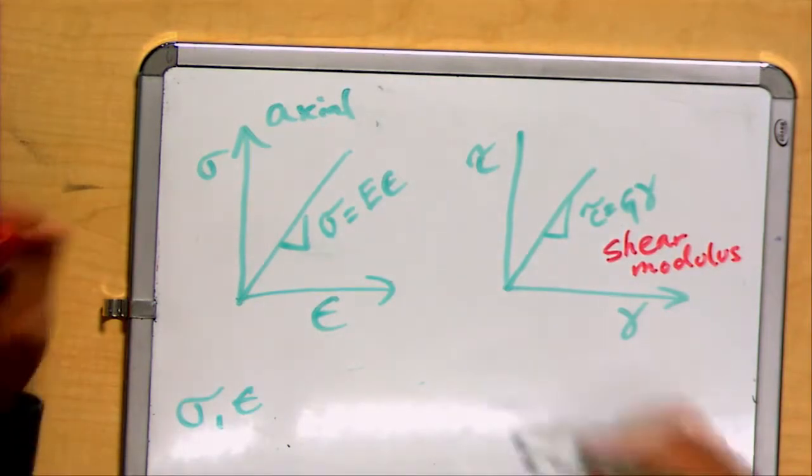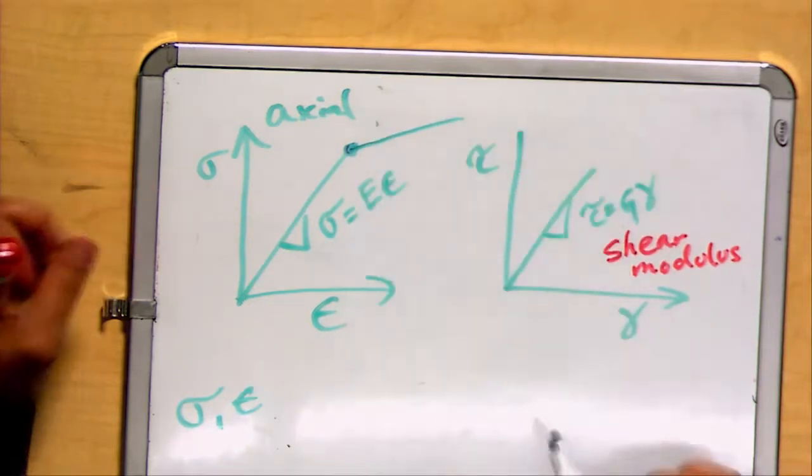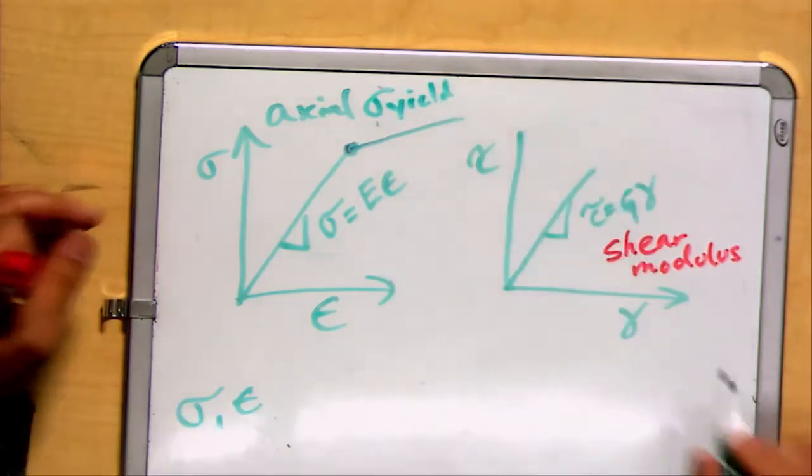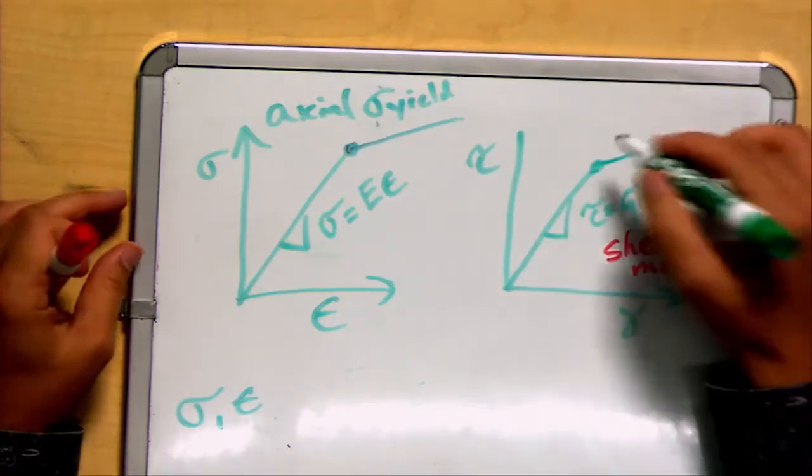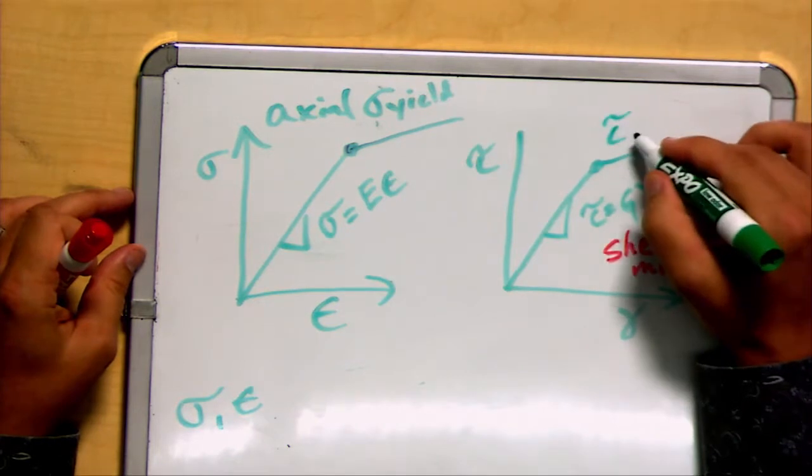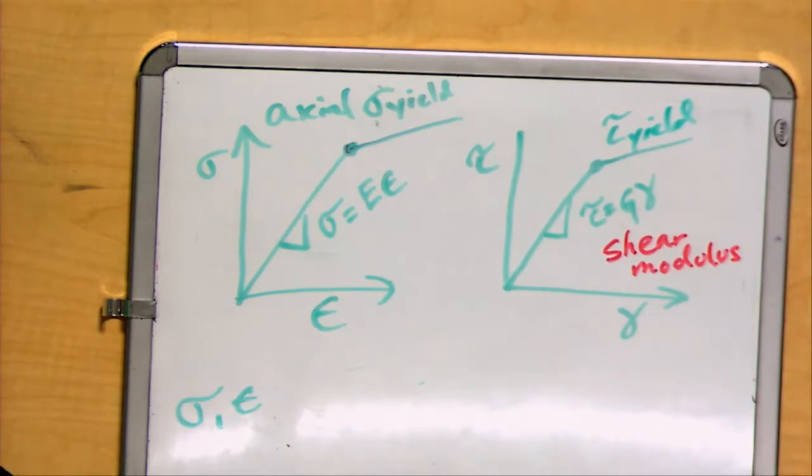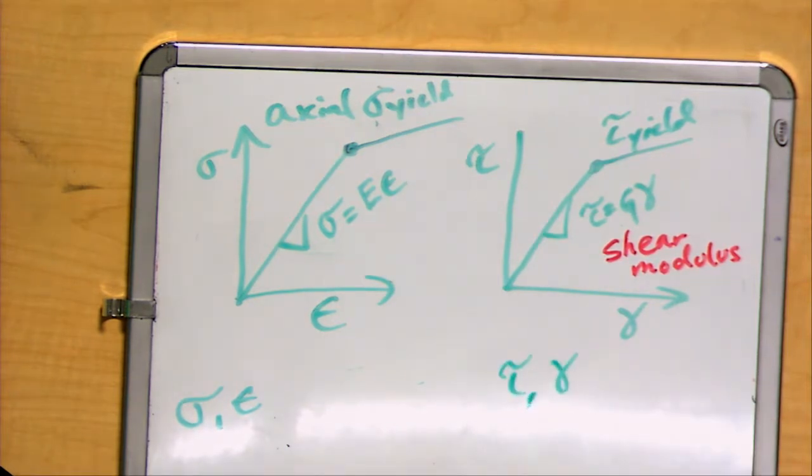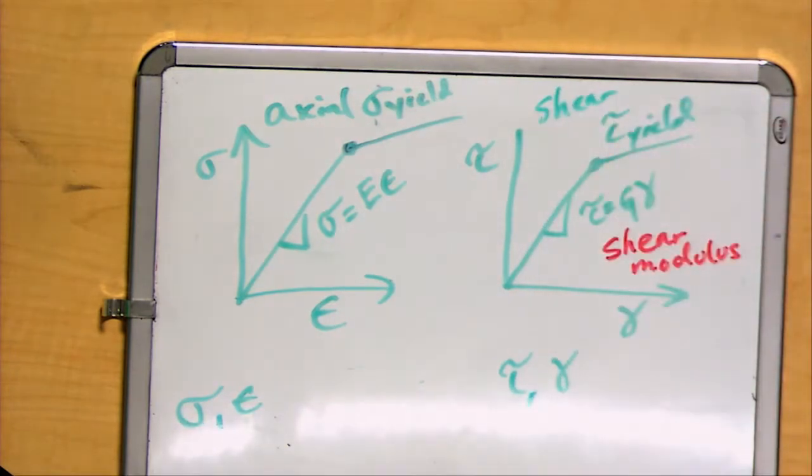In addition, as we observe in axial loading, there is some point at which the material yields, sigma yield. We will also generally observe some point in shear where the material yields, the yield stress for shear. Notice there's parallels between both situations: tau and gamma for shear, and sigma and epsilon for axial loading.